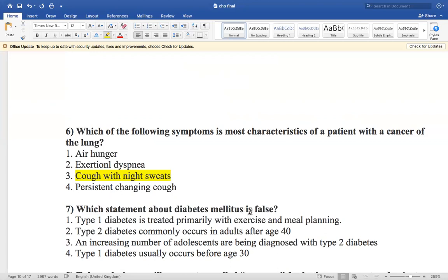The false statement is that type 1 diabetes is treated primarily with exercise and meal time. Type 1 diabetes is our juvenile diabetes or early onset diabetes. And our type 2 diabetes is our late onset diabetes or adult onset diabetes.